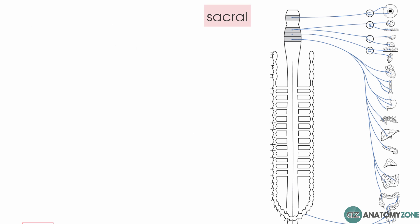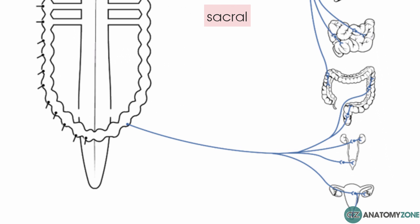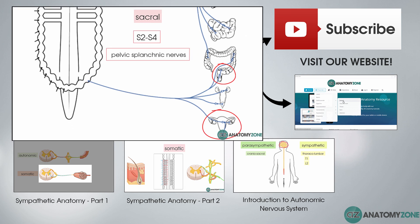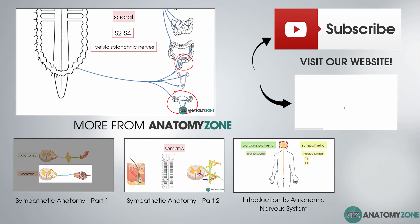The sacral component of the parasympathetic nervous system arises from spinal segments S2 to S4, giving rise to the pelvic splanchnic nerves. In this region it innervates the muscles of the rectum and inhibits the internal anal sphincter, stimulates the detrusor muscle of the bladder wall and inhibits the internal urethral sphincter. In the male reproductive system, the parasympathetic nervous system causes erection, whereas the sympathetic nervous system is responsible for ejaculation.